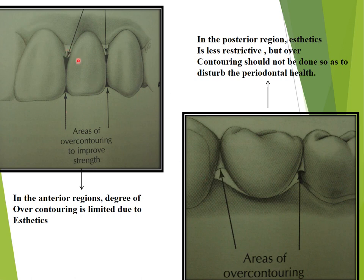Regarding over-contouring: in the anterior region, the degree of over-contouring is limited due to aesthetics, so we are not really able to over-contour anteriorly. In the posterior region, aesthetics is a little less restrictive, but over-contouring should not be done as it disturbs the periodontium. Over-contouring is wrong anywhere.